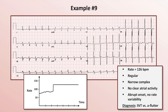The overall ventricular rate is unusual for both of those possibilities, but there really isn't any other explanation. There is absolutely nothing to suggest flutter waves in the inferior leads or V1, and the tiny R' waveform seen in V3 could be a P-wave tacked onto the back of a QRS — both more suggestive of SVT.